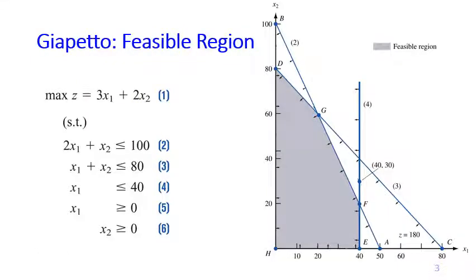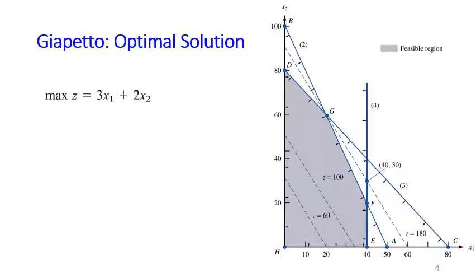So here is the feasible region of the Giapetta problem that we've seen before. You can see here the numbers 2, 3, 4, they correspond to the number of the constraints. Now how can we find the optimal solution graphically? You have this objective function 3x1 plus 2x2. What you need to do is to draw an isoprofit line.